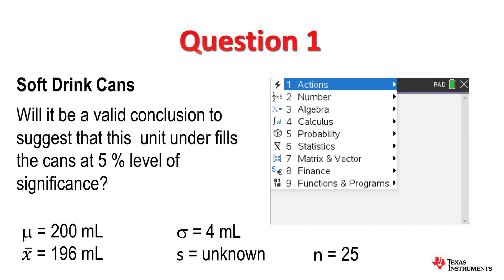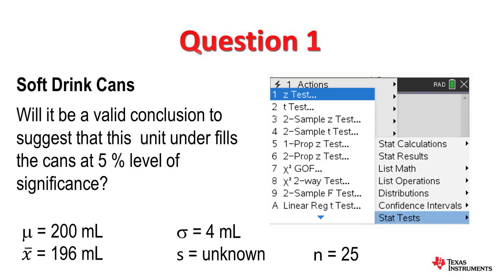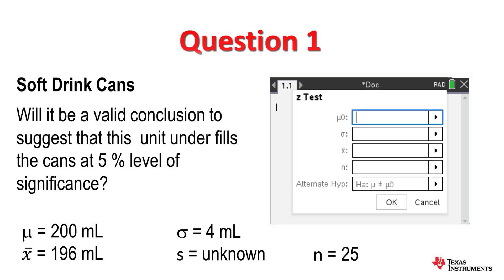To do this test, we will be using a statistical test. Let's go to number 6, which is statistics, and there we find number 7 is stat tests. Under number 7, we find the very first test is the Z-test. We are dealing with statistical data, so we don't have raw data, so we need to change that and select statistics.